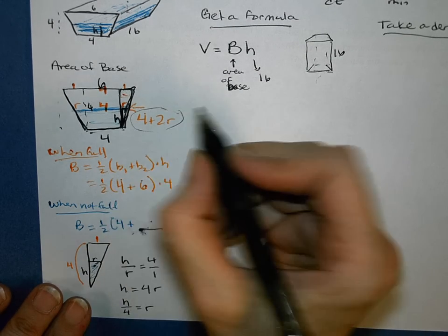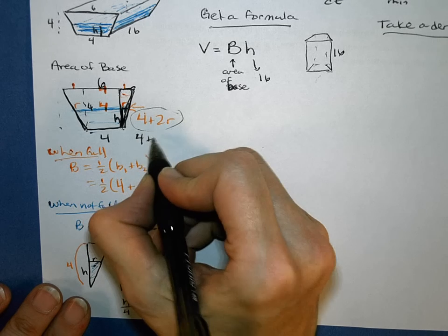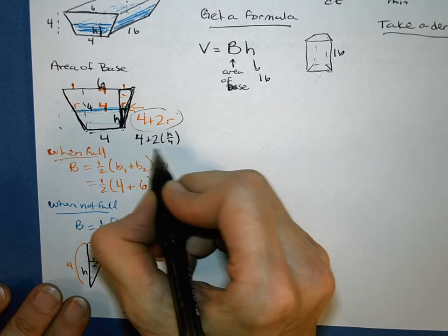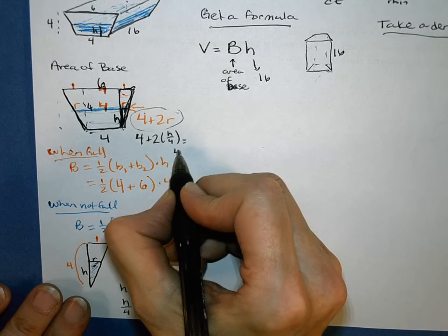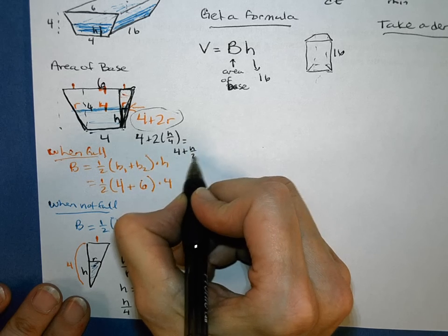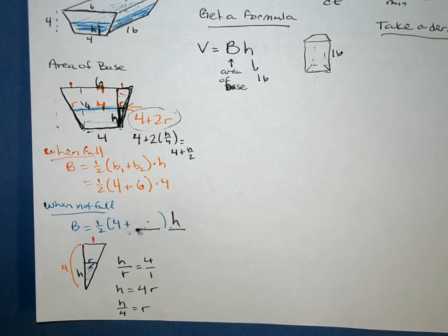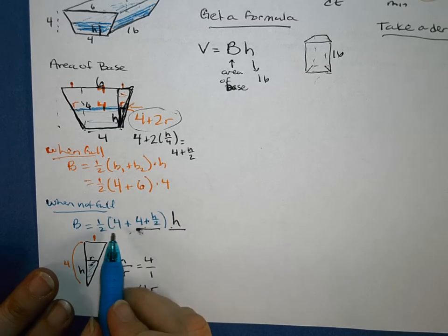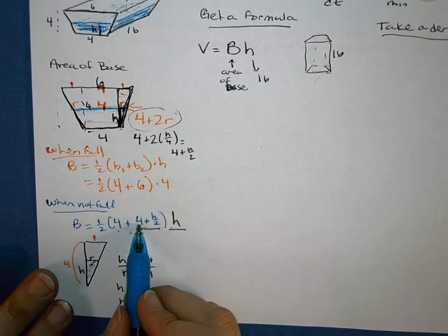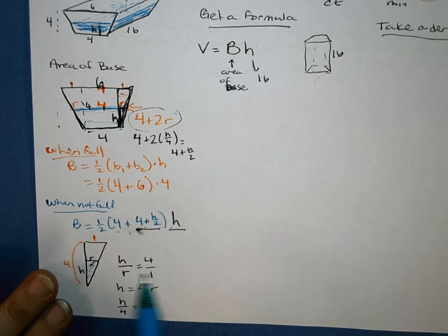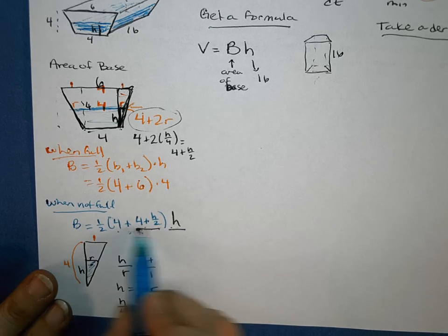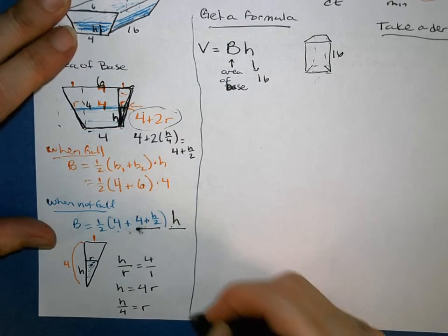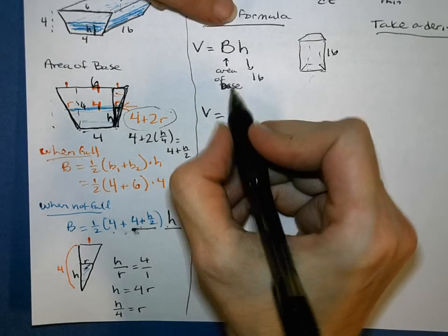Alright, so here's what my top base was. Another version of that would be 2 times H over 4, which could be H over 2. And that's what's going to go into this spot: 4 plus H over 2. 4 for the base 1, and 4 plus H over 2 for base 2, and then times this height. So there is our lovely area of the base.